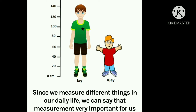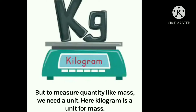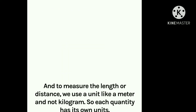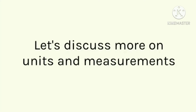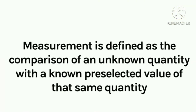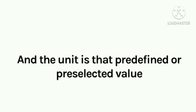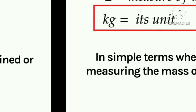Since we measure different things in our daily life, we can see that measurement is very important for us. But to measure a quantity like mass, we need a unit. Here, kilogram is the unit for mass. And to measure length or distance, we use a unit like a meter, not kilogram. So each quantity has its own units. Let us discuss more on units and measurements.